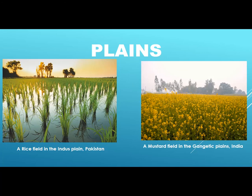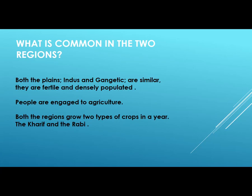Now, see the plains. A rice field in the Indus plain, Pakistan, and the other picture is a mustard field in the Gangetic plains, India. Plains are lying near the rivers. All the places near the Indus river are called the Indus plains, and the places in India near the Ganges river are called the Gangetic plains. Mustard — in Urdu it is called Sarson. Look how beautiful it looks. Both the Indus and Gangetic plains are similar: they are fertile and densely populated, people are engaged in agriculture, and both regions grow two types of crops in a year — the Kharif and the Rabi.